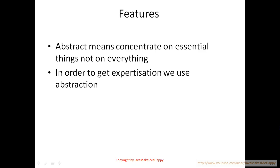In order to get expertise, we use abstraction. You are the person who knows how to travel from A to B in the shortest way — you know the shortest path, the time, the route. But you don't know the route from A to C or A to D. So you are expert of the route A to B. We can use abstraction for that kind of expertise.